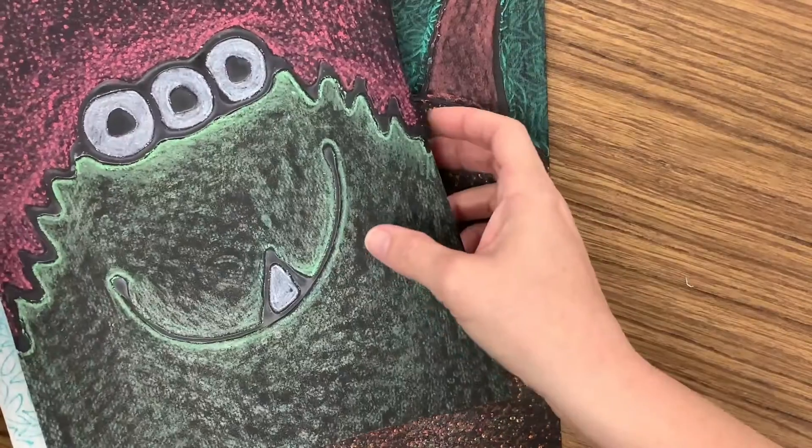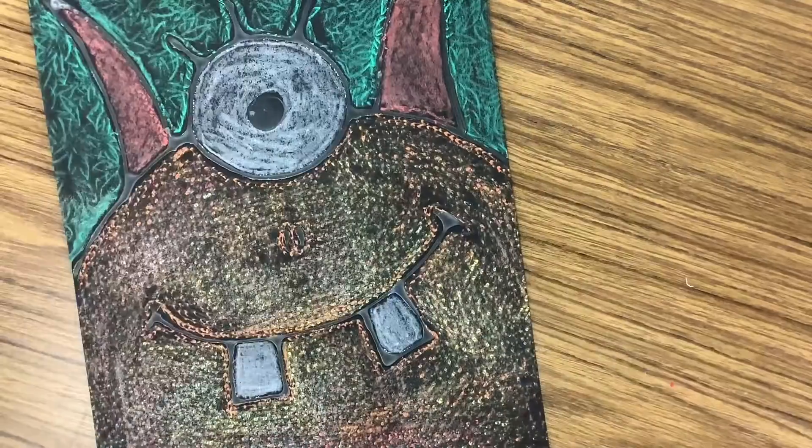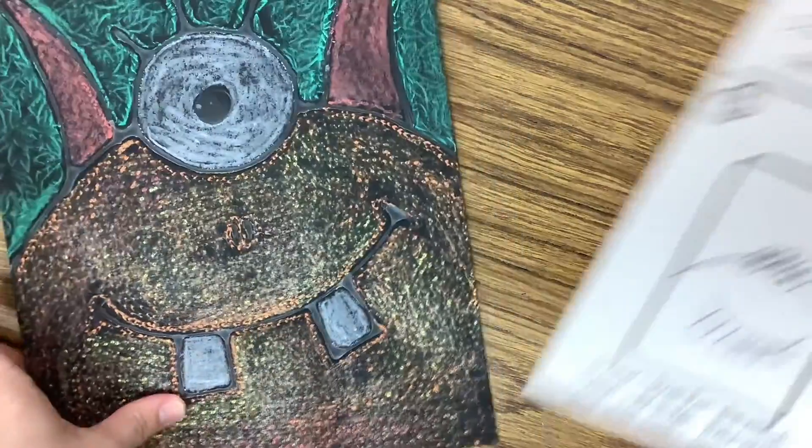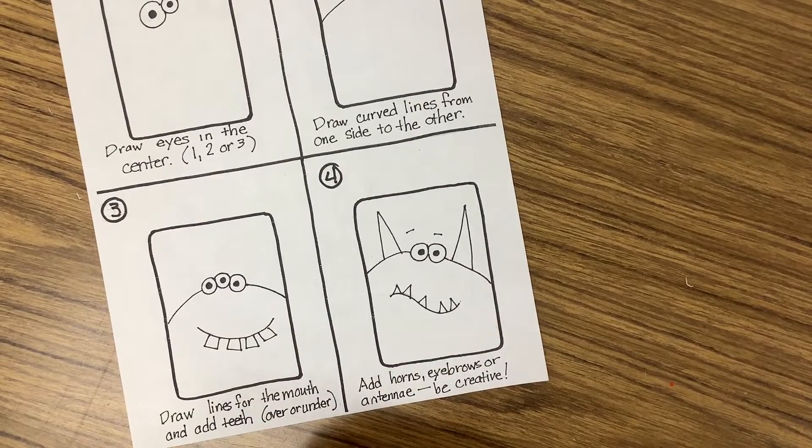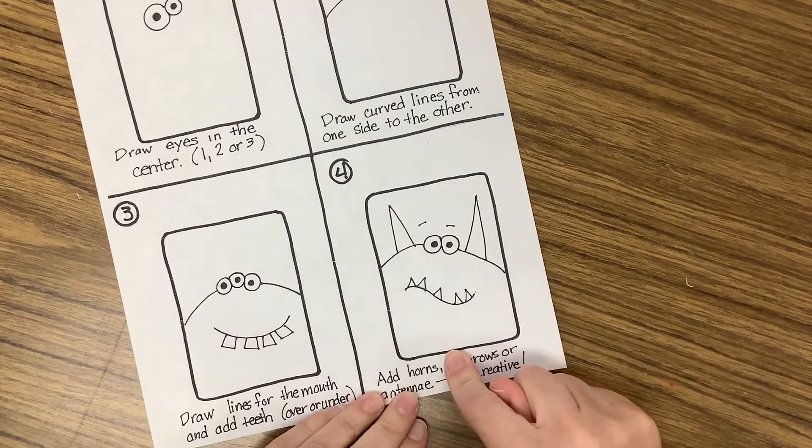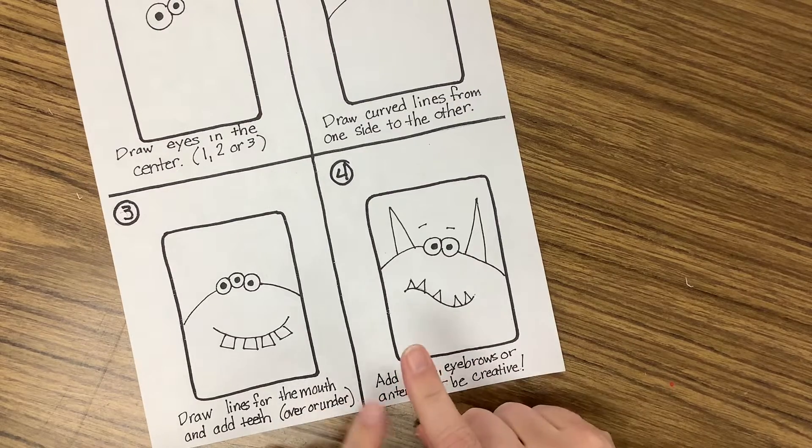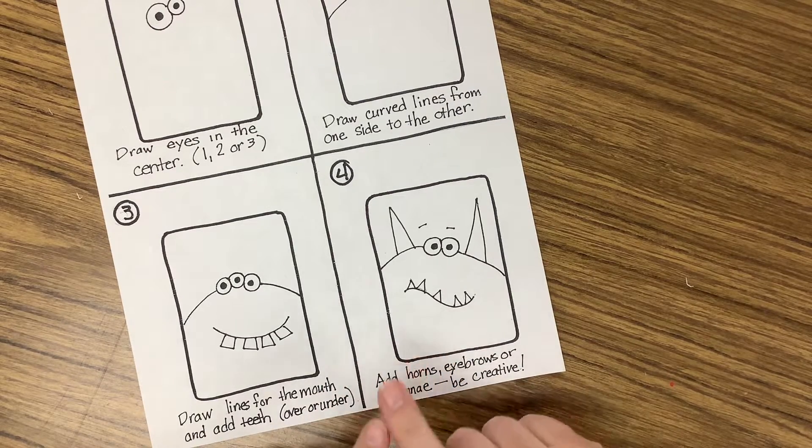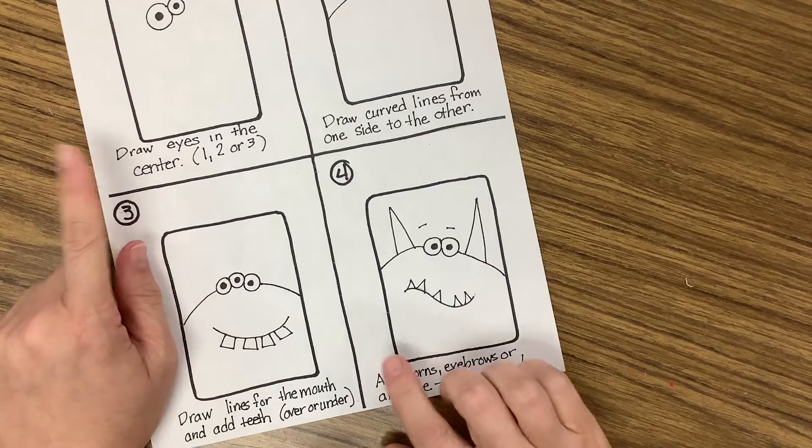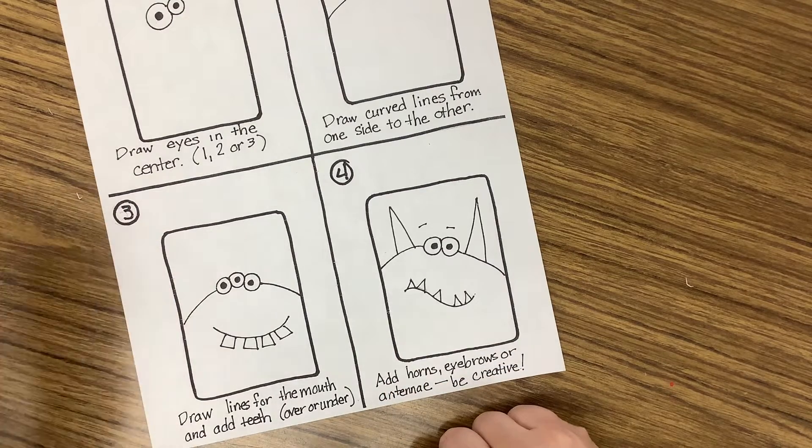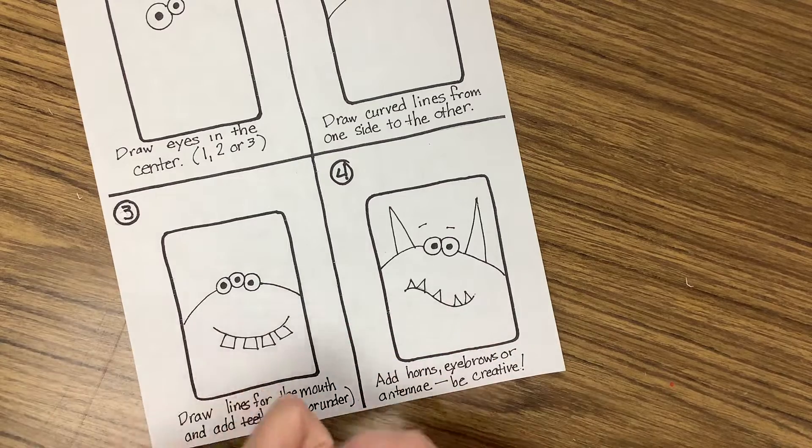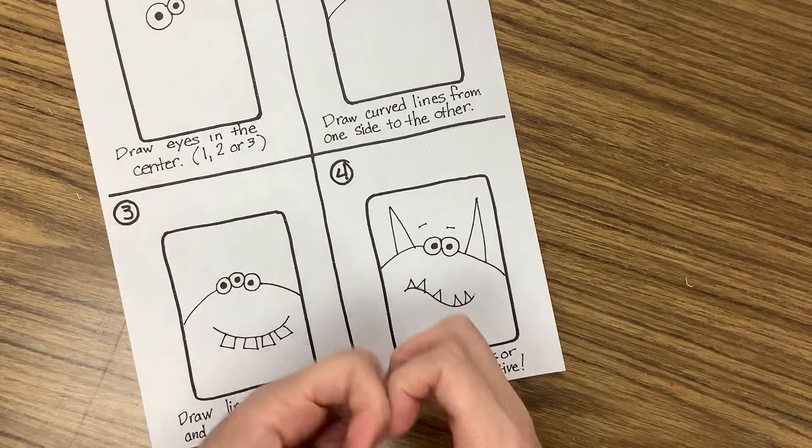So what you're going to do first is plan an idea. And I have this idea sheet which you can use. It gives you the directions on how to draw kind of a simple creature. And I stress the word simple because we are going to be doing something called glue drawing. And with glue drawing, you can't have too many small shapes because it will just turn into a glob.